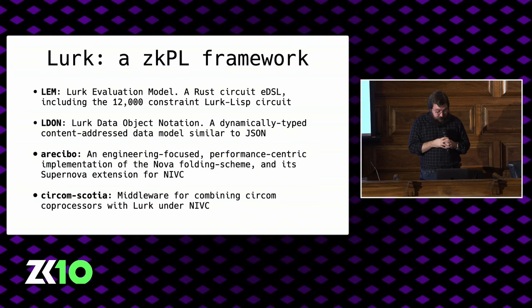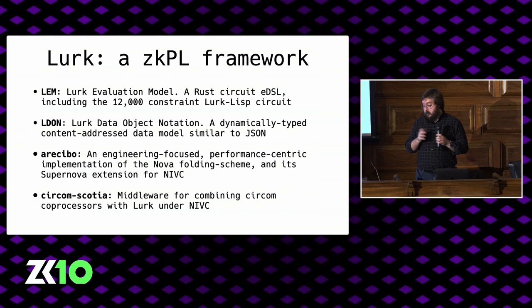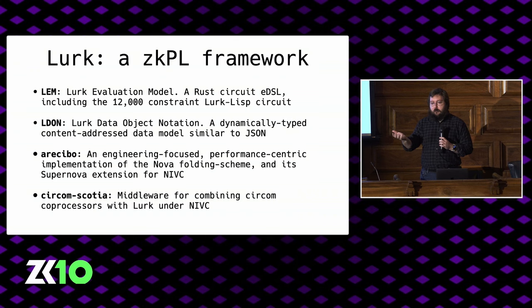We also have a universal data language, very similar to JSON, and we're going to be extending it with support for algebraic data types, which is going to be really exciting. One of the most exciting pieces of work we've done recently is a new implementation of Nova called Arecibo, designed to be very focused on engineering and performance, rapid iteration, and it now includes the Supernova extension for non-uniform IVC. This means if you write a universal circuit using Lurk with Arecibo, you can now support efficient coprocessors for special-purpose operations — essentially FFI from your universal circuit into a coprocessor for things like SHA-256 — without incurring overhead in the rest of your proof. We have middleware that allows you to define these coprocessors in Circom, and we plan on supporting many other circuit DSLs.